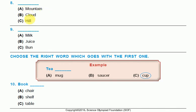Question number eight: mountain, cloud, or hill. Mountain and hill are the same word, but cloud is a different word. That's why its answer is cloud. Question number nine: milk, juice, or bun. Milk and juice are liquid. Bun is not liquid. That's why bun is a different word. Bun is the right answer. Choose the right word which goes with the first one.